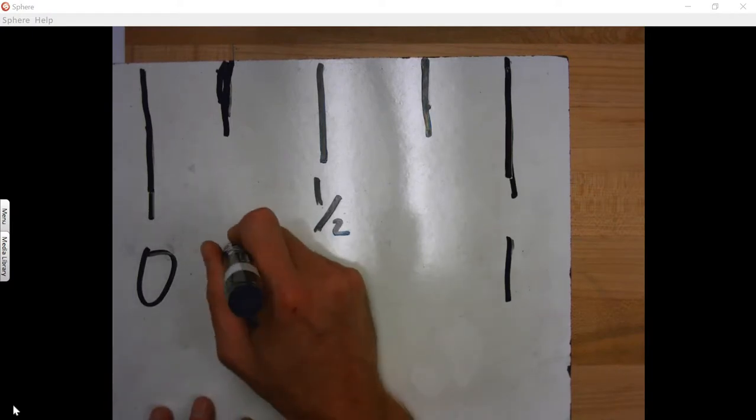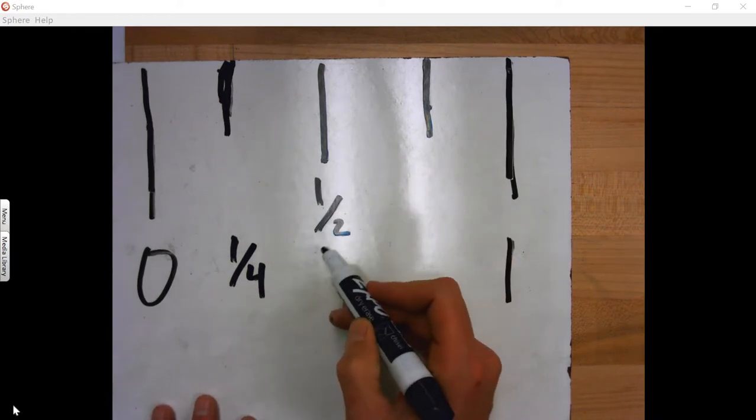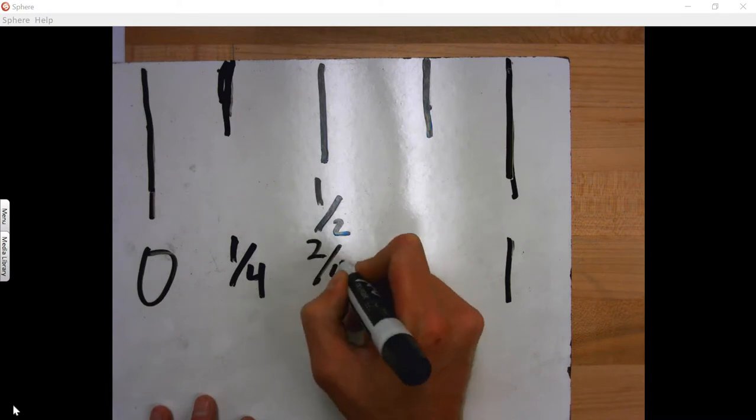So this would be one-fourth. Now, if we were talking about this line in terms of fourths, what would this line be? Two-fourths. Three-fourths.